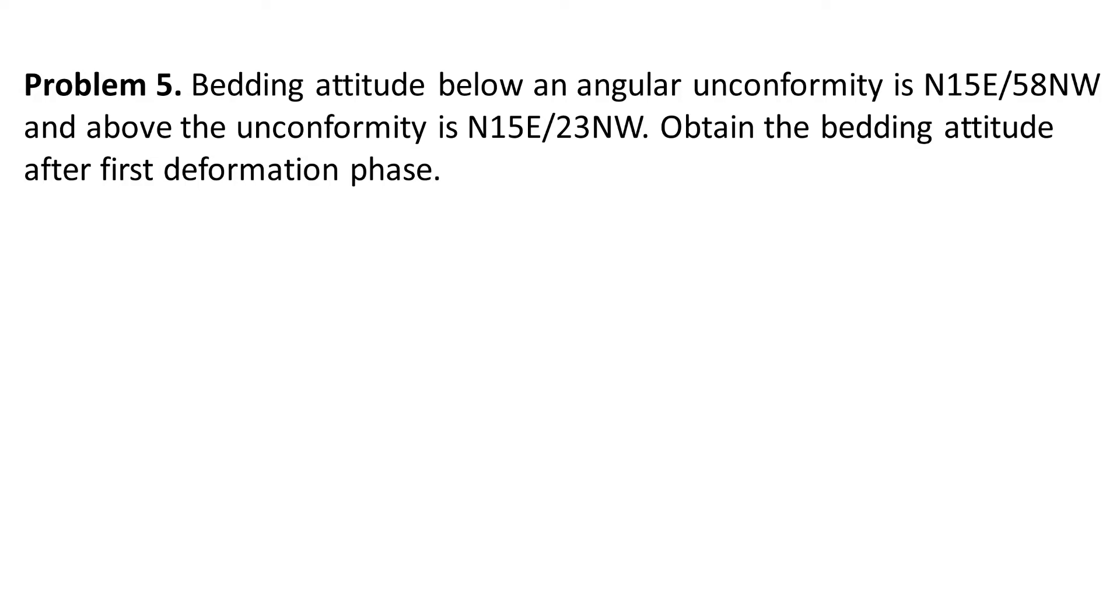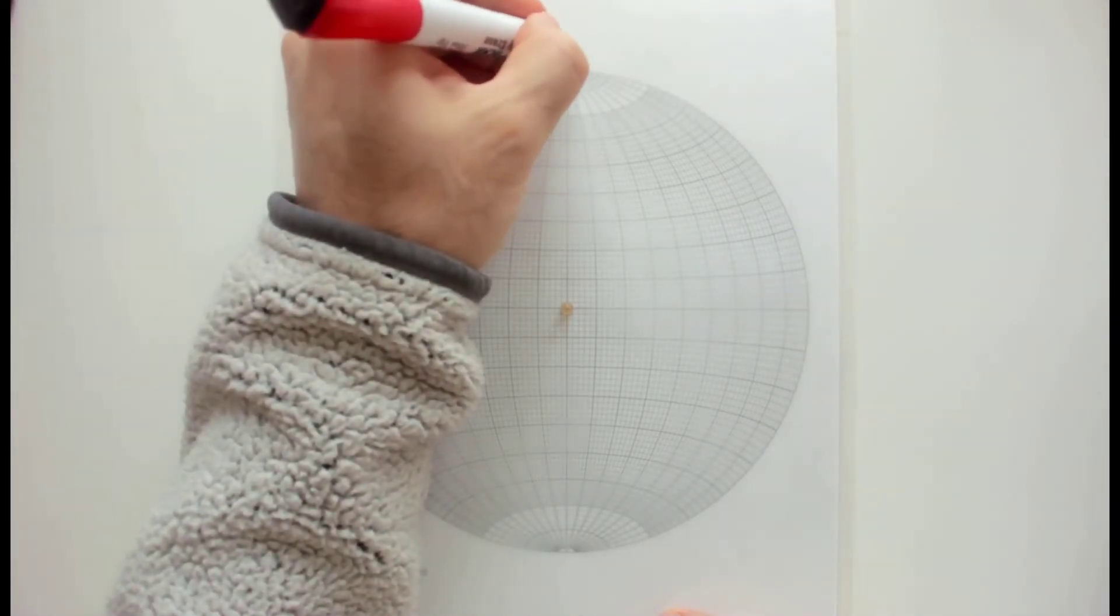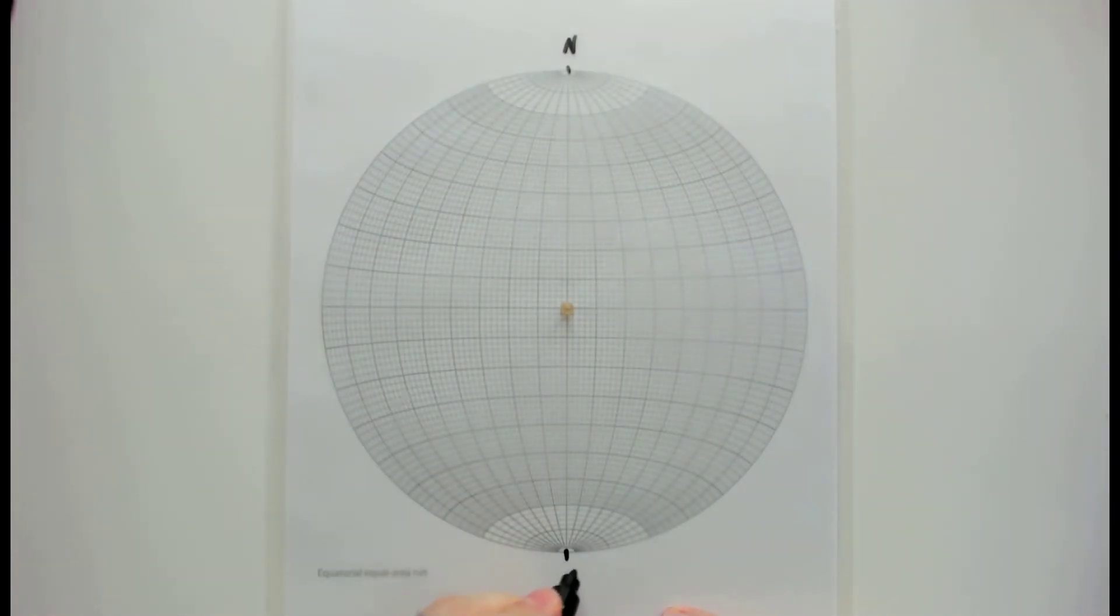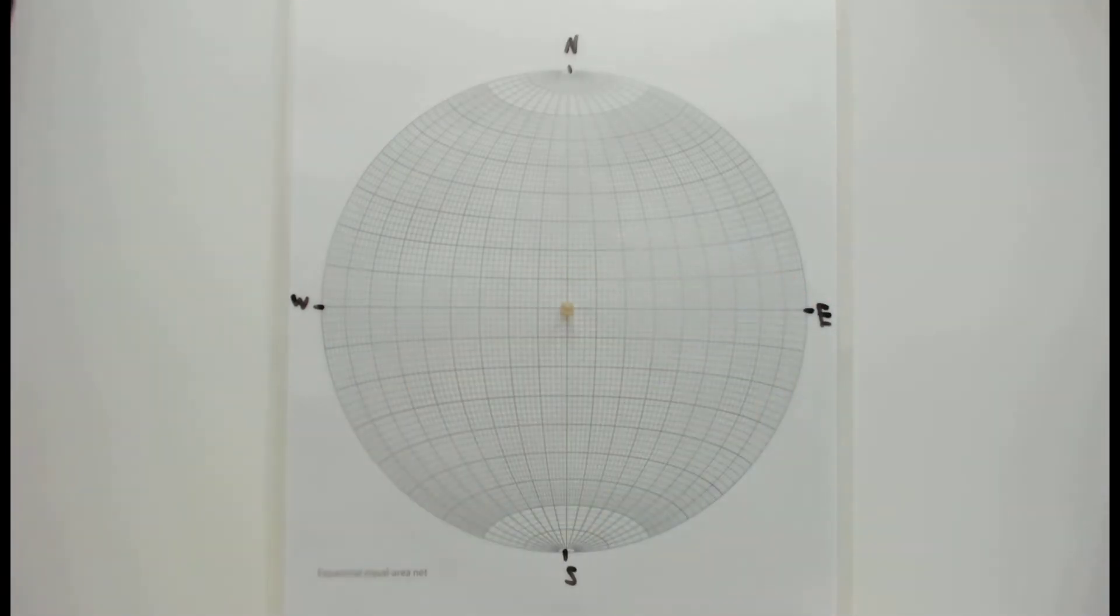This problem is quite similar to the previous problem. Let's write down the attitudes of the layers, but before that, let me mark north, south, west, east. The units above the unconformity are N15E/23NW, and below the unconformity, I'm showing with B.